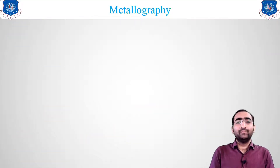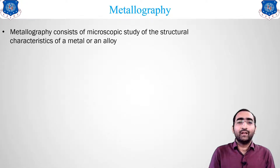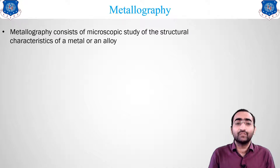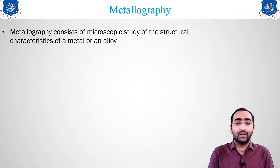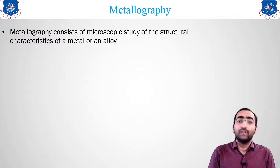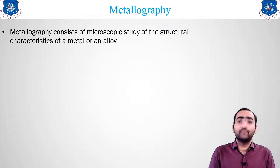Let us begin this unit by knowing certain definitions about metallography. Metallography consists of the microscopic study of the structures of a metal or an alloy. For studying the structure, we have two options: micro and macro. We will be discussing what micro and macro are in today's lecture.